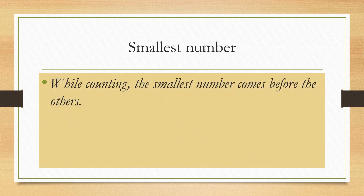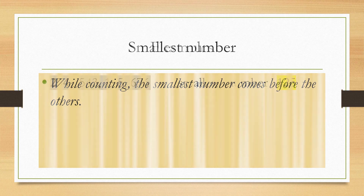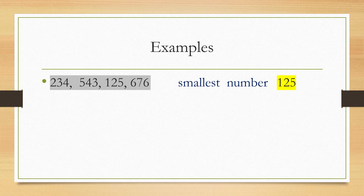Now let us move on to the next topic — smallest number. Children, please remember, while counting, the smallest number comes before the others. Now let us have some examples. Look at the numbers: 234, 543, 125 and 676.